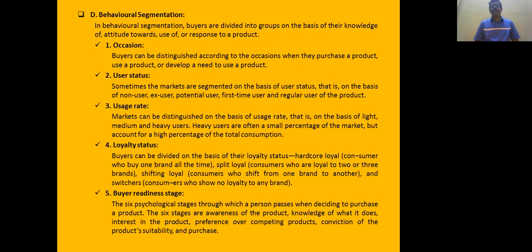Next is behavioral-based segmentation, which can be done in many forms. The first is occasion-based segmentation — for entering into a party there are different costumes, and for a marriage there are different types of jewelry. Next is user status-based segmentation — if they want to sell to first-time users, a discount may be sufficient, but selling to regular users requires many other strategies.